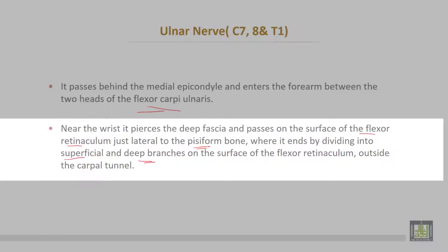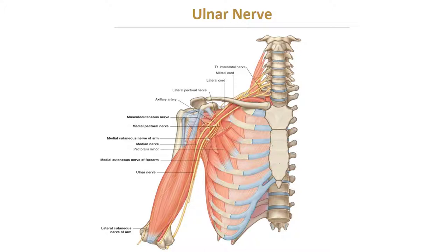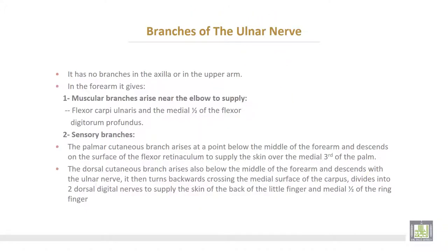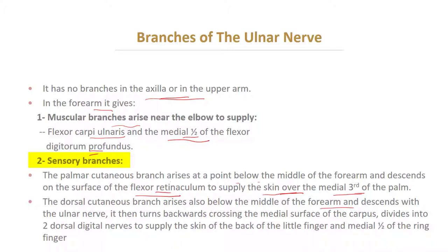The ulnar nerve arises from the medial cord of the brachial plexus, then passes behind the medial epicondyle. It has no branches in the axilla or upper arm. In the forearm, it gives muscular branches near the elbow to supply flexor carpi ulnaris. Sensory branches include: the palmar cutaneous branch, which arises below the middle of the forearm and descends on the surface of the flexor retinaculum to supply the skin of the medial third of the palm; and the dorsal cutaneous branch, which also arises below the middle of the forearm.